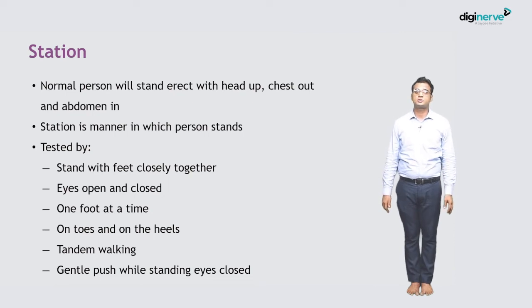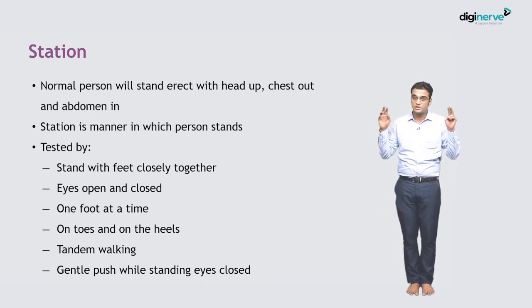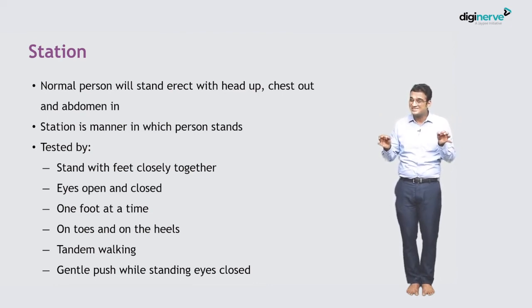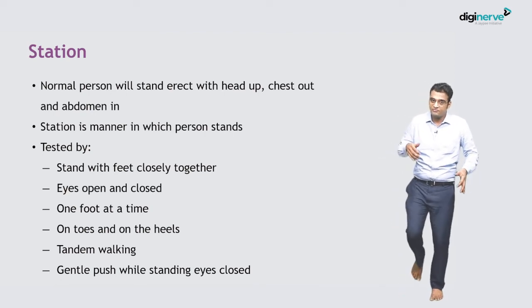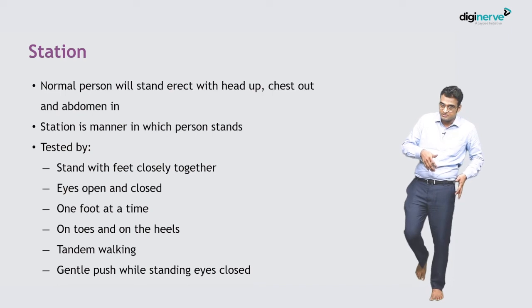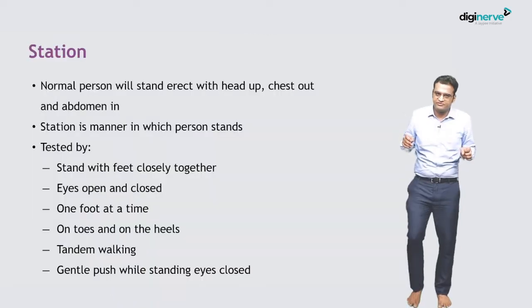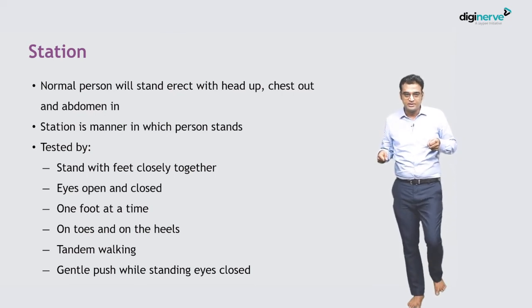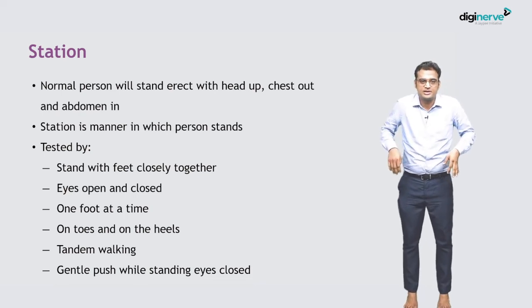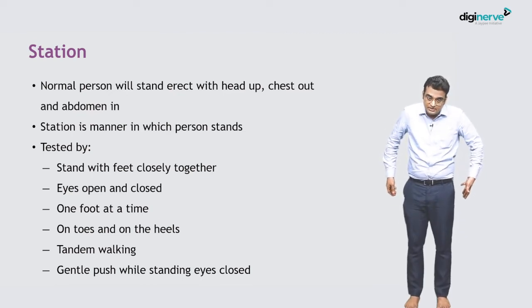Ask the patient to stand with eyes closed. The moment the child closes the eyes and falls down, this is Romberg's sign, which is an indicator of posterior column dysfunction. Similarly, if the patient has a very subtle hemiplegia, when you ask the patient to stand on one foot at a time, if the left foot is hemiplegic then the child will not be able to stand on it. Then ask the child to stand on the toes — if there is plantar flexion weakness the child will be unable to stand on the toes.